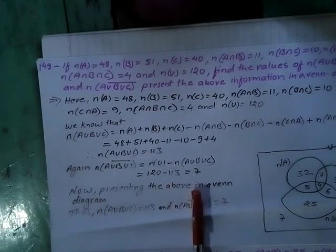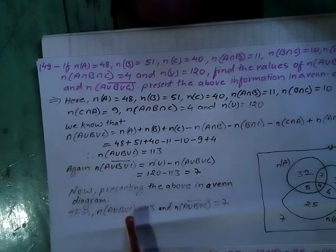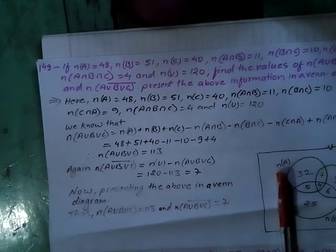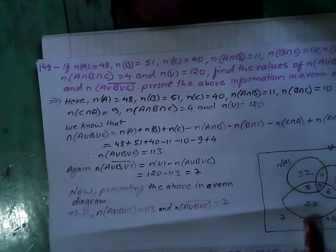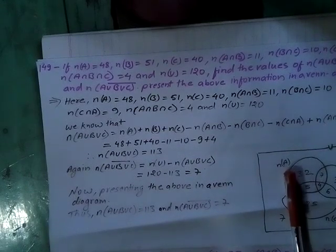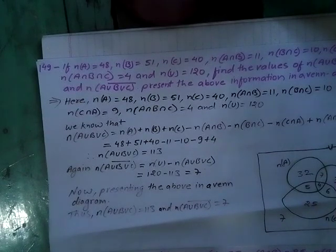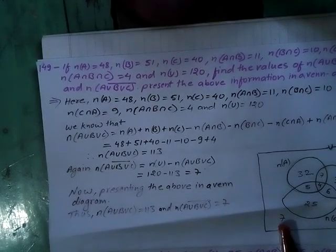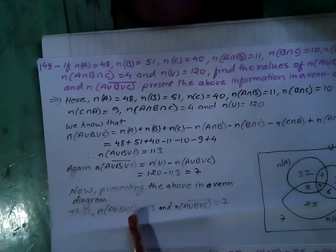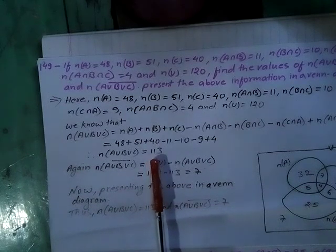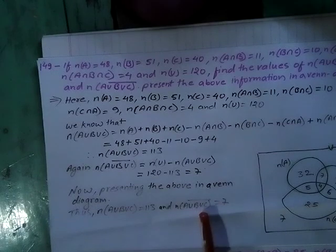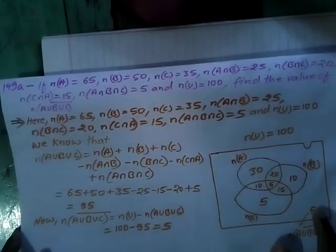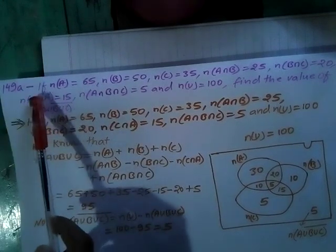Presenting the above in a Venn diagram: the big box denotes N(U), first circle denotes N(A), second circle denotes N(B), third circle denotes N(C). N(A) only = 32, N(B) only = 34, N(C) only = 25. The complement of all three sets is 7. Thus N(A∪B∪C) = 113 and N(A∪B∪C)' = 7.